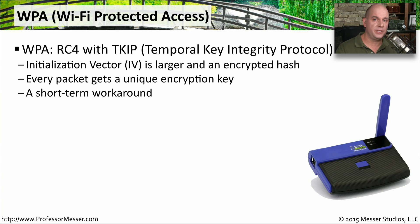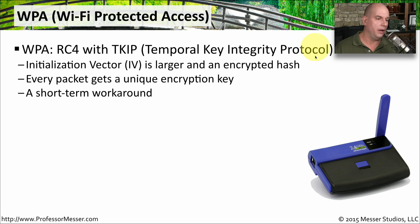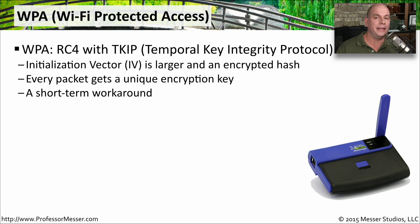When the problems with WEP were discovered, we needed a different way of encrypting and protecting data over wireless networks. We came up with a standard called WPA — Wi-Fi Protected Access. WPA used RC4 with TKIP, the Temporal Key Integrity Protocol. RC4 is the hashing method used to encrypt the information, and TKIP managed how keys were kept and sent over the network. It uses a larger initialization vector, had an encrypted hash, and every packet got a unique encryption key, making it much more difficult to crack than WEP.